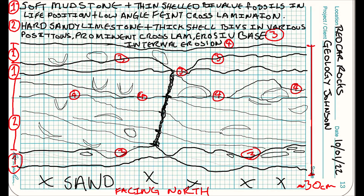I think there are two rock types here. Rock one is soft, easily eroded, and has a few thin-shelled, mostly complete bivalve fossils. Bivalve is the scientific term for things like clams, oysters, cockles and scallops — they're mollusks with a shell that closes with two valves. These fossils are in the life position, which means that most of them died and were buried where they were living on the seabed. Rock one also has a very faint low-angled cross lamination, and where it sits on top of rock two it generally gently drapes across rock two like a blanket.